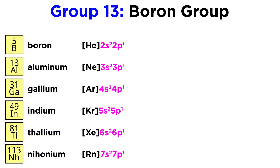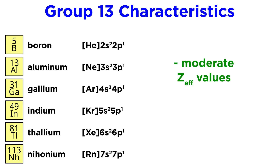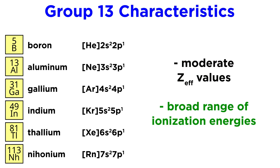These elements have electron configurations ending in NS2 and P1, and it is with this group that we begin to see more varied properties in reactivity. They have moderate Z-effective values and a range of ionization energies.